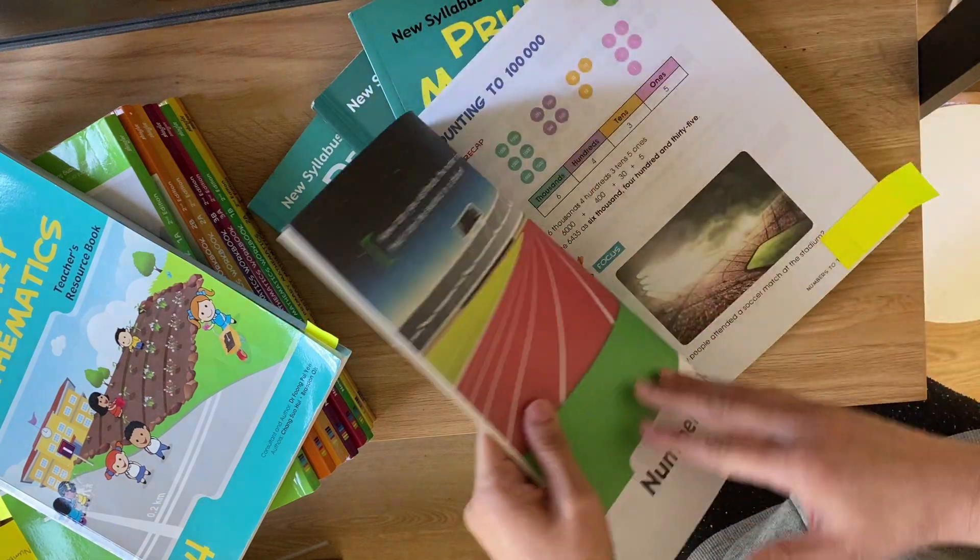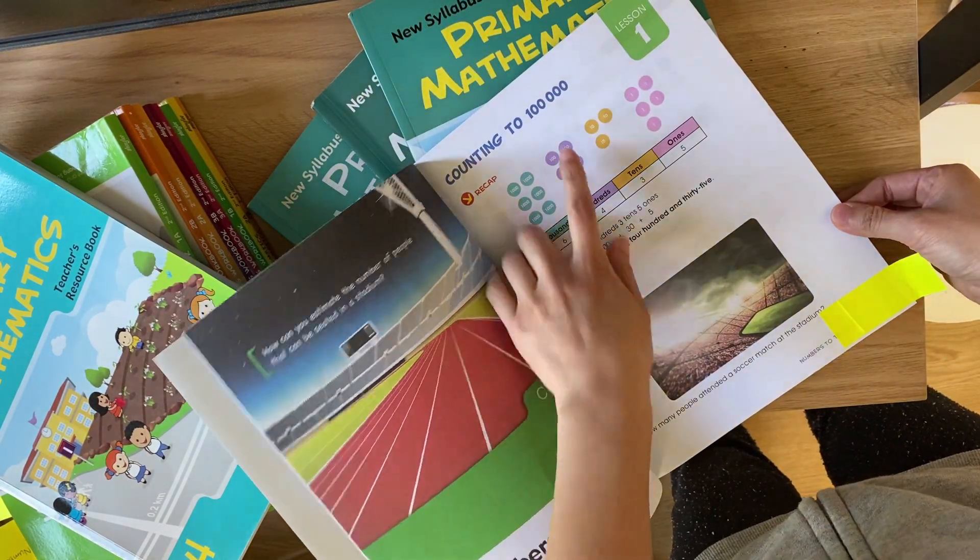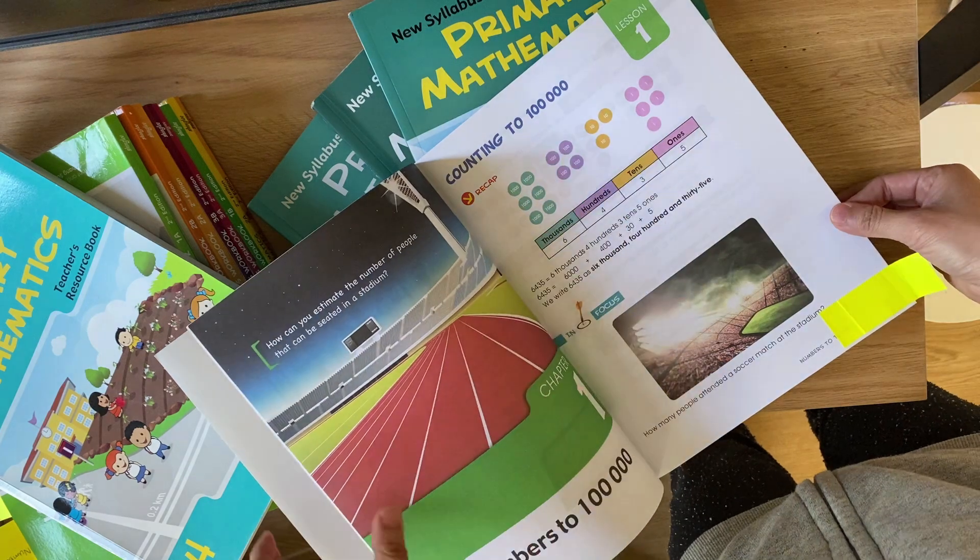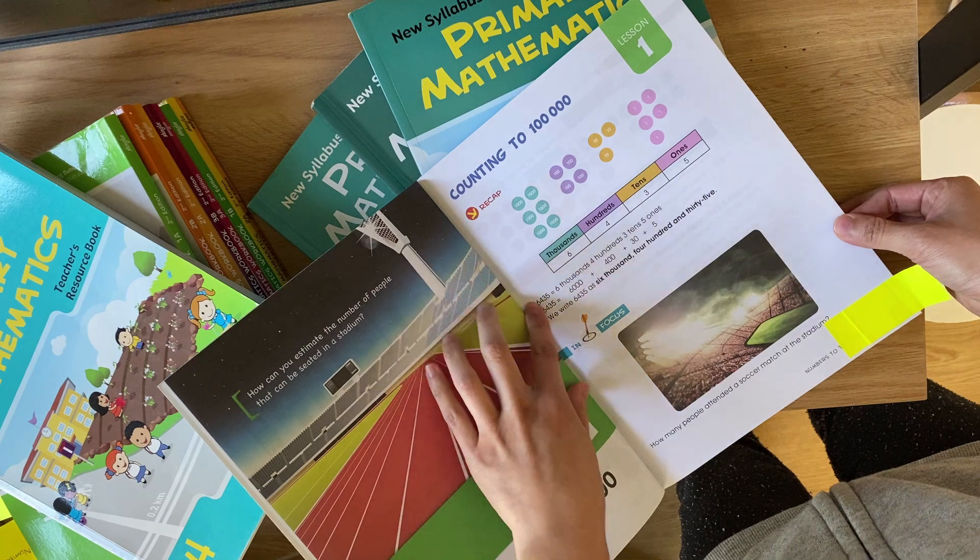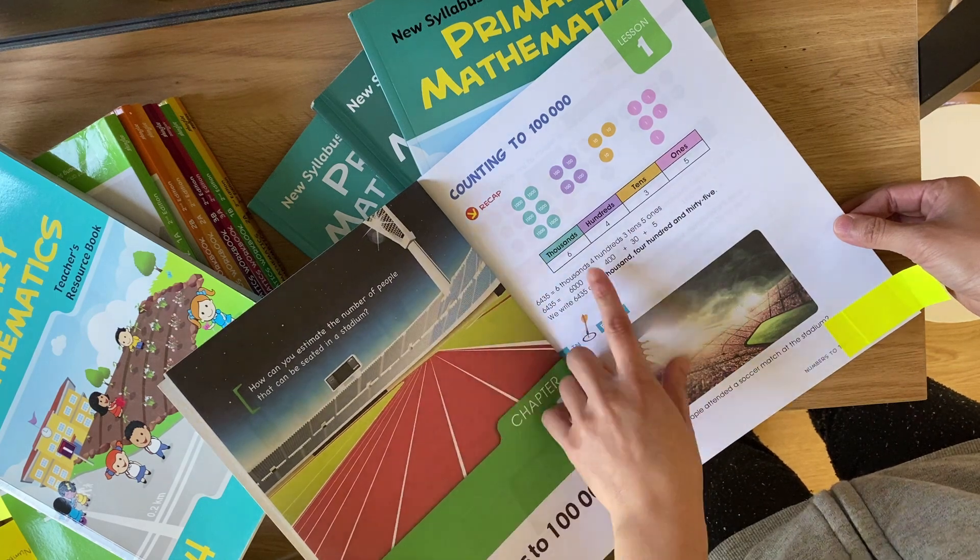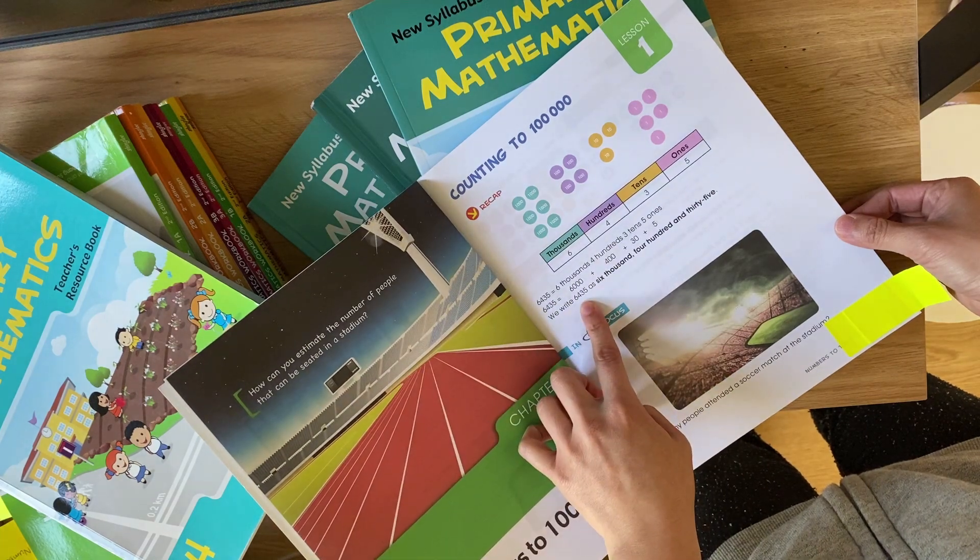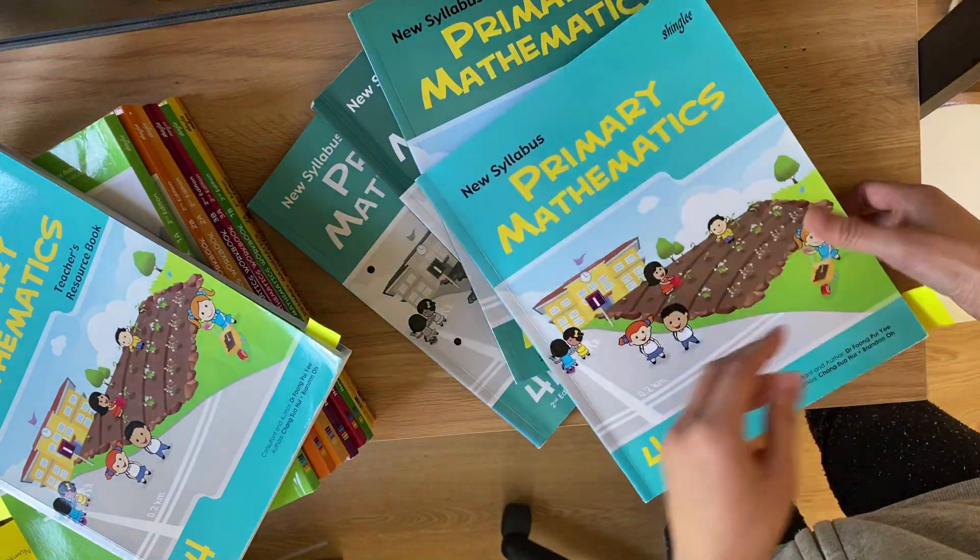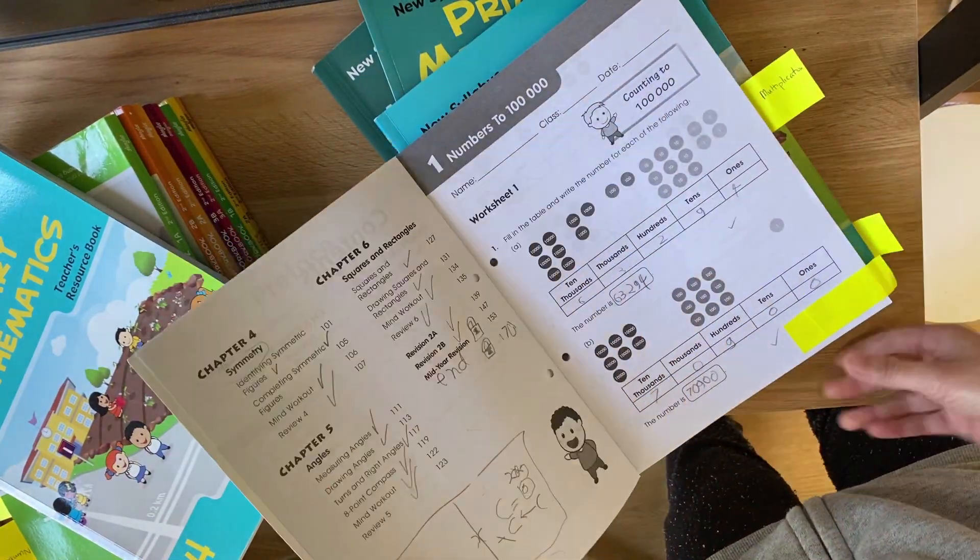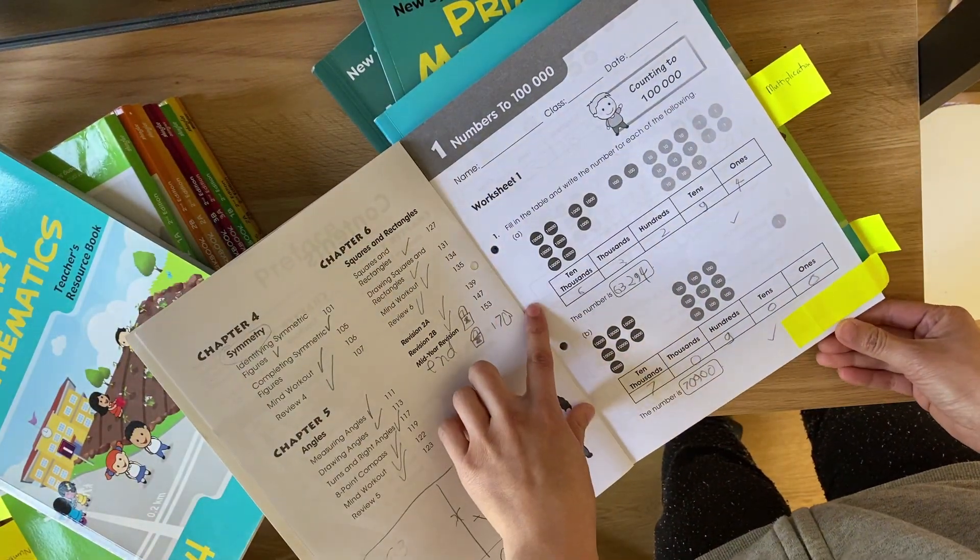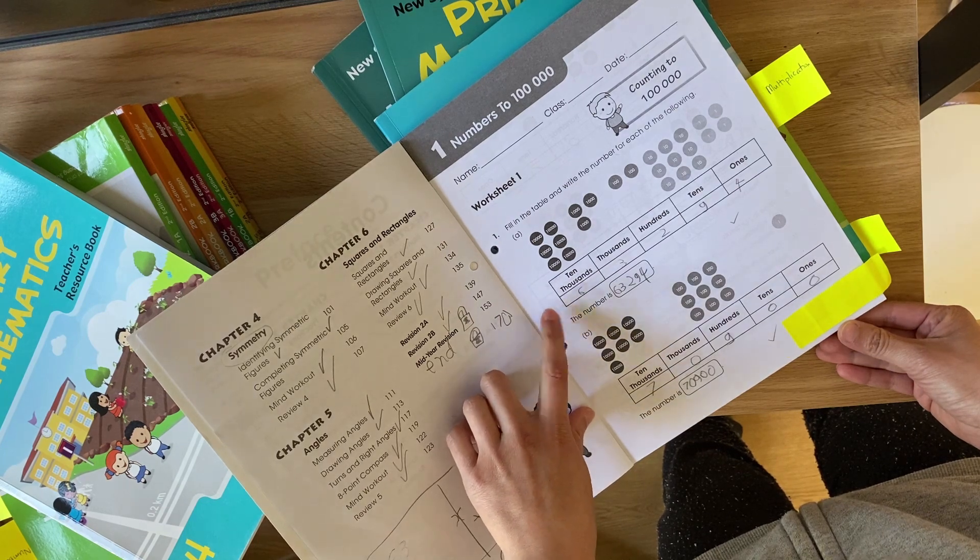So we'll look first at 4A in the textbook. So this is lesson one, counting to one hundred thousand, so really looking at place value. So they've got an example question here. We'll now go to the workbook to this corresponding chapter and you'll see it's the exact same type of question, but now the student has an opportunity to practice that independently.